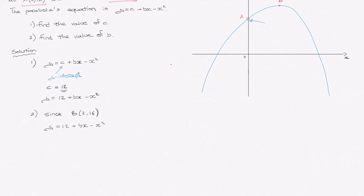I replace x by 2 and y by 16. So that would be 16 equals 12 plus b times 2 minus 2 squared. That leads us to 16 equals 12 plus 2b minus 4. Simplifying a bit, that's 16 equals,